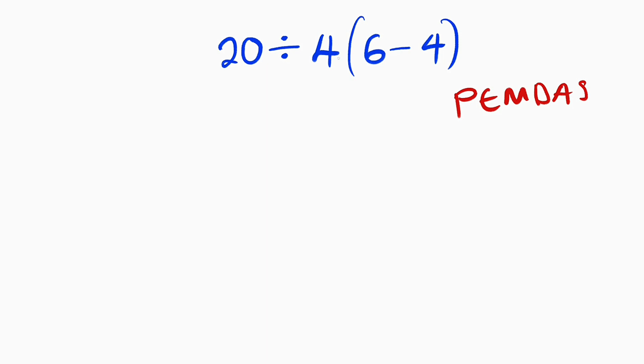And another thing you should know is that between these parentheses and 4, there is a constant multiplication. Therefore, we can rewrite this expression as 20 divided by 4 multiplied by 6 minus 4 in parentheses. P stands for parenthesis. Let us simplify that. We have this equal to 20 divided by 4 multiplied by 2.